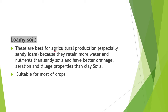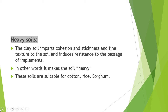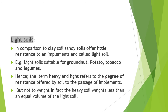Classification of soil particles: gravel has diameter greater than 2 mm. Coarse sand: 2 to 0.2 mm. Fine sand: 0.2 to 0.02 mm. Silt: 0.02 to 0.002 mm. Clay particles: less than 0.002 mm. Loamy soil is best for agricultural production because it retains more water and nutrients than sandy soil, and has better drainage, aeration and tillage properties than clay soils, making it suitable for most crops.